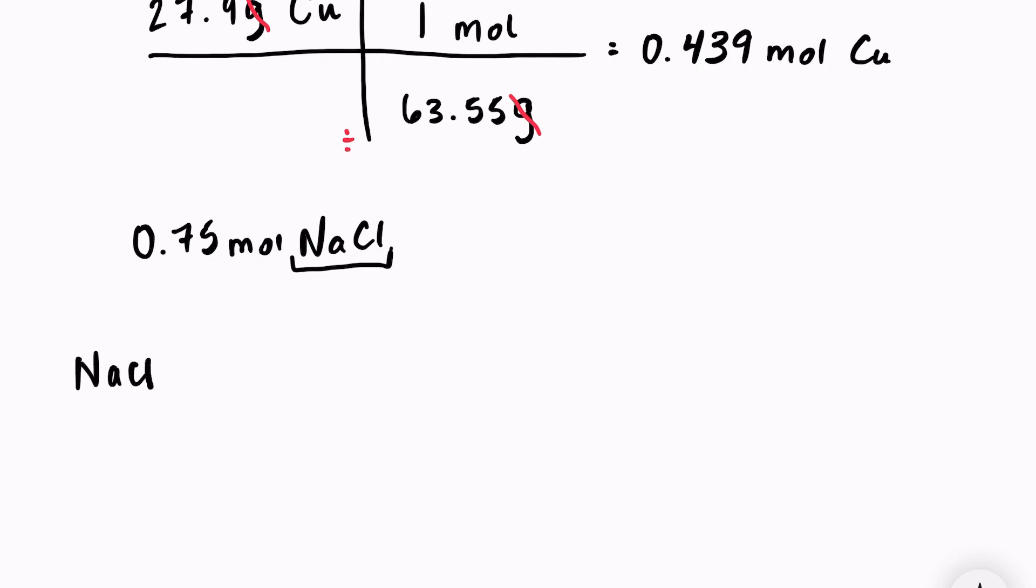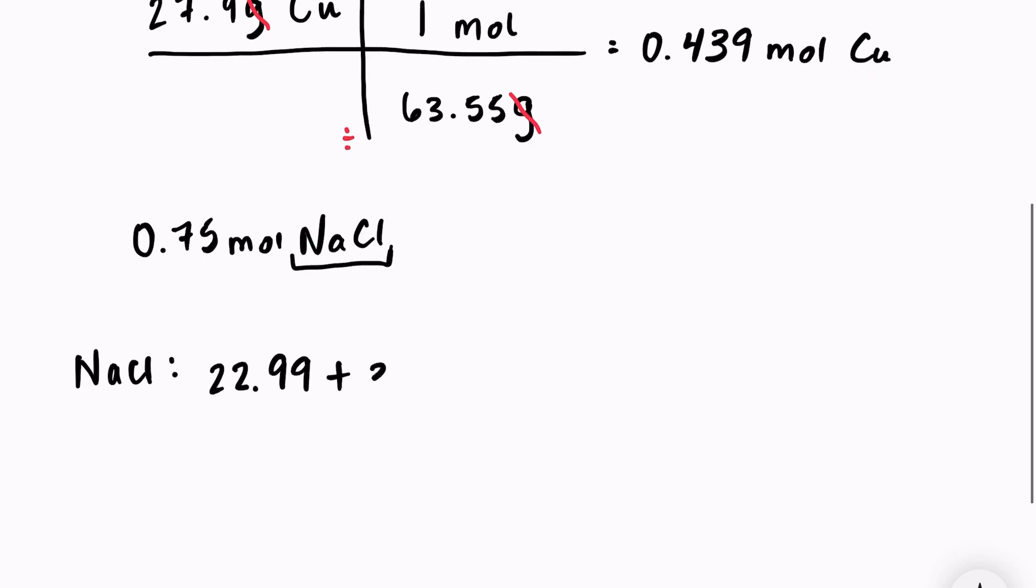So the first thing we need to do is figure out what is the molar mass of salt. So salt, NaCl, is equal to the mass of sodium, which is 22.99, plus the mass of chlorine, which is 35.45, which equals 55.44 grams.